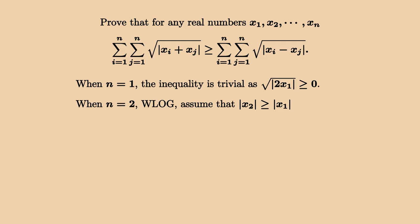Now, for the case n equals 2, it already requires some work. Let's assume that x2 is larger than x1 in absolute value. Then the left-hand side is lower bounded by 2 times square root of 2x1 plus 2 times square root of x1 plus x2.